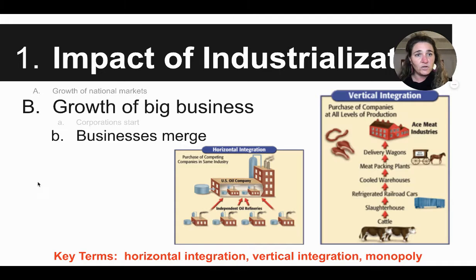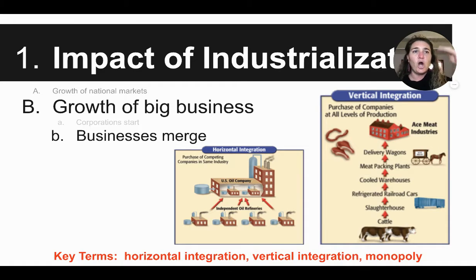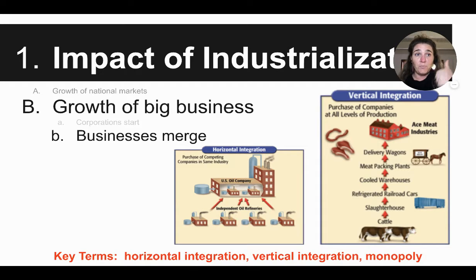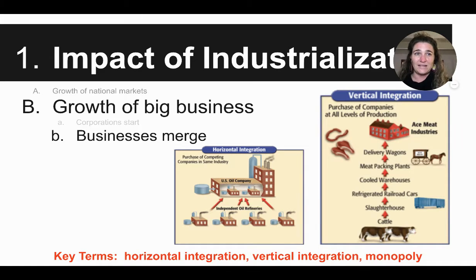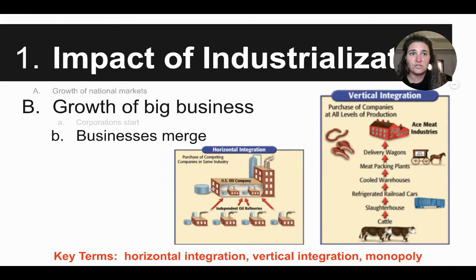Another type of integration is what's called vertical integration. Vertical is up and down — so horizontally you buy all the businesses across the industry in the same business as you, while vertical up and down is where you're controlling all parts of production. You're buying all the businesses that have to do with making your product from the bottom to the top. Here's an example from the meat packing industry: they own the cattle, the slaughterhouse, the refrigerated train cars transporting the meat, the warehouses, the meat packing plant, the delivery wagons, and the actual stores where the meat is sold. You own all levels of production from the bottom to the top — that's vertical integration.